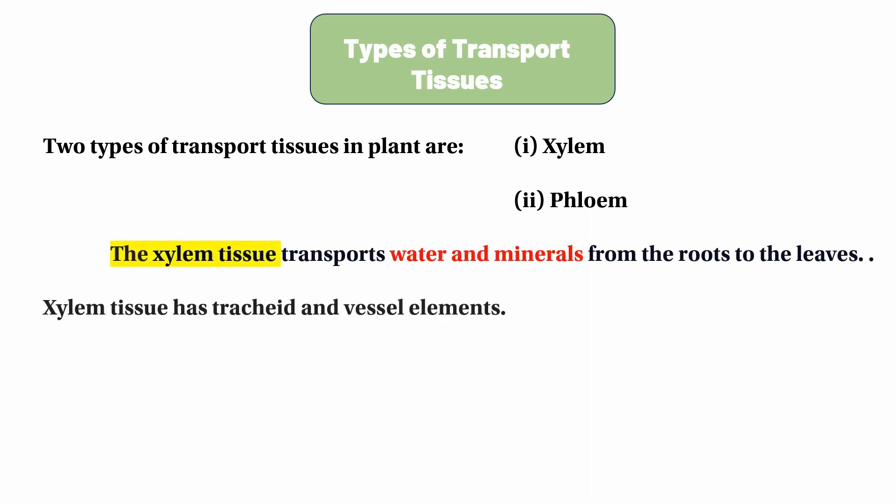Xylem transports water and minerals from the roots to the leaves. Xylem tissue has tracheids and vessel elements. Xylem tissue has four types: xylem tissue, xylem parenchyma, xylem fiber. Xylem fiber is used to remove material.